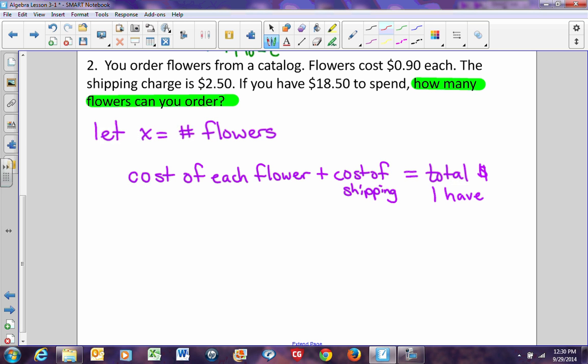Now, if x is the number of flowers I order, I know that the cost of each flower plus the cost of shipping equals the total amount of money I have. Each flower costs $0.90. How many flowers am I going to buy? I don't know, but each flower is going to cost $0.90 times the number of flowers that I buy, plus the cost of shipping, which is $2.50. And that has to equal the total amount of money I have to spend, which is $18.50. So the cost of each flower times the number of flowers plus my shipping equals the total amount of money that I have.